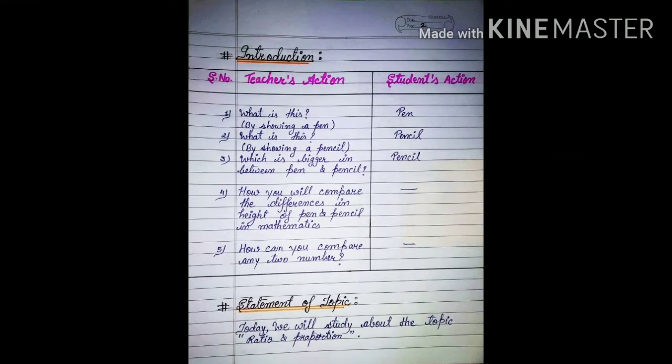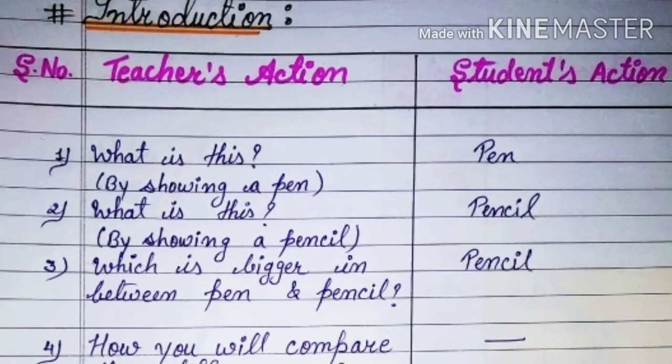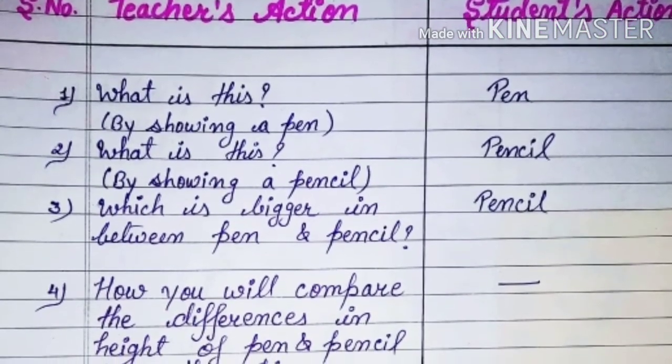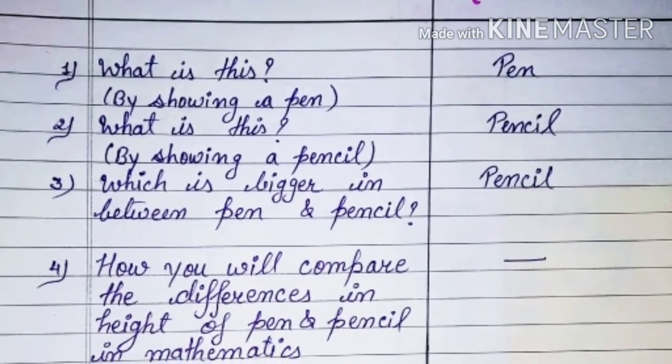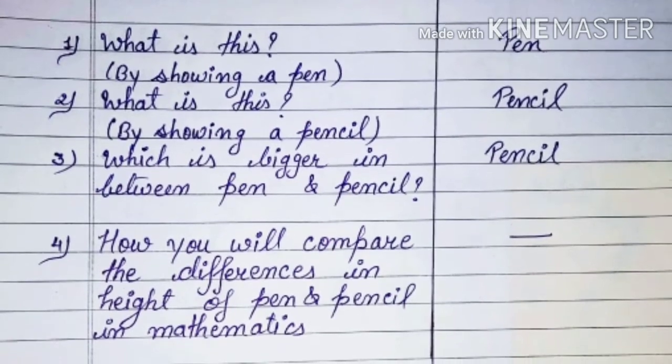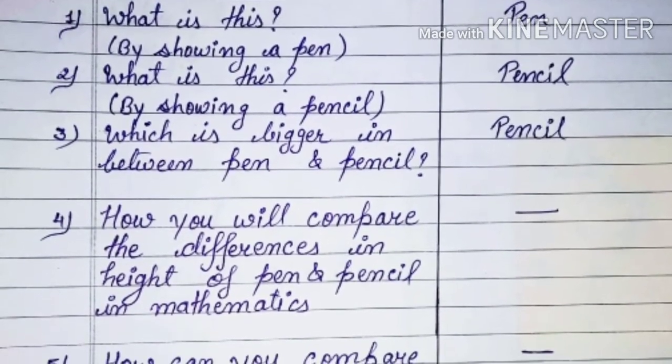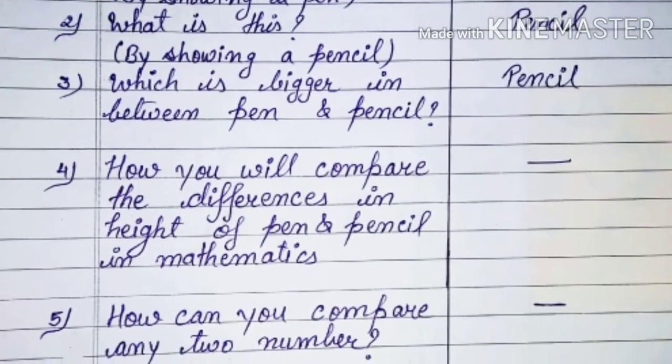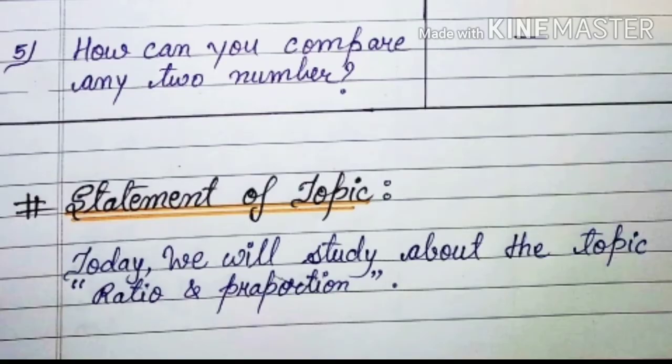After that, we have our introduction part, where teachers question students about their previous knowledge to test them. For example, when they show a pen, they ask what is this, the student will answer pen. Then they show a pencil. Now, how you compare them with ratio, it will be difficult for them. Now we will tell them what is ratio and proportion. We will learn about ratio and proportion.